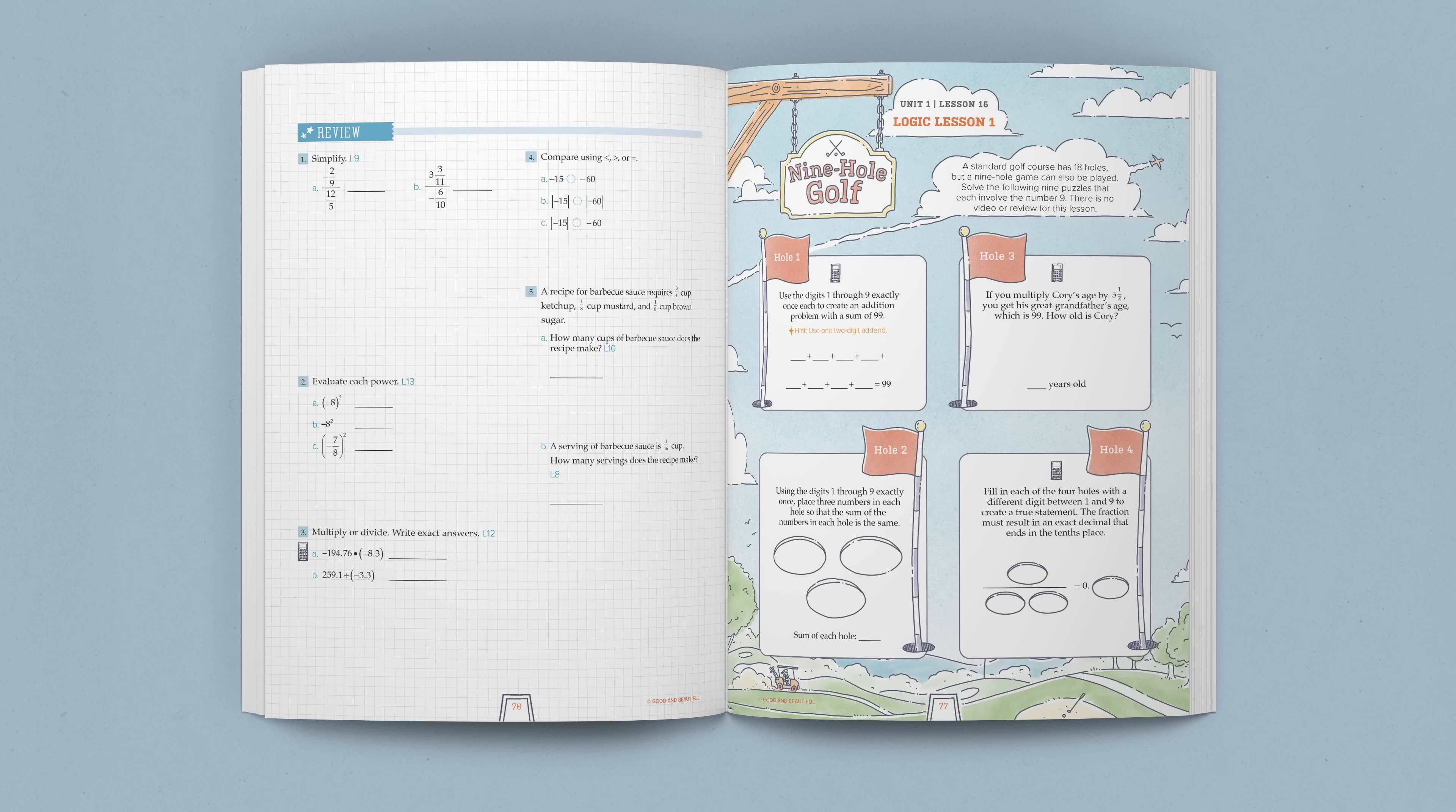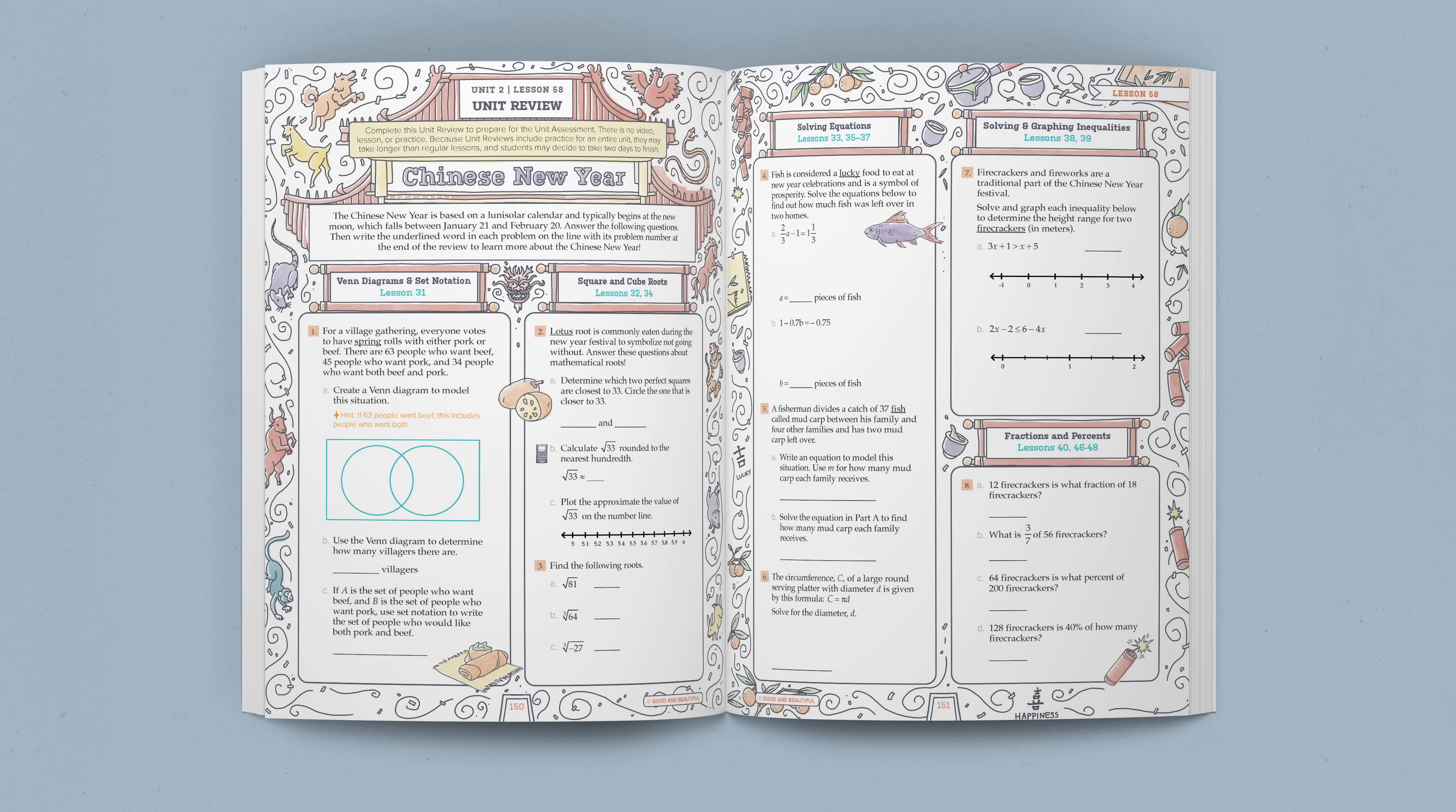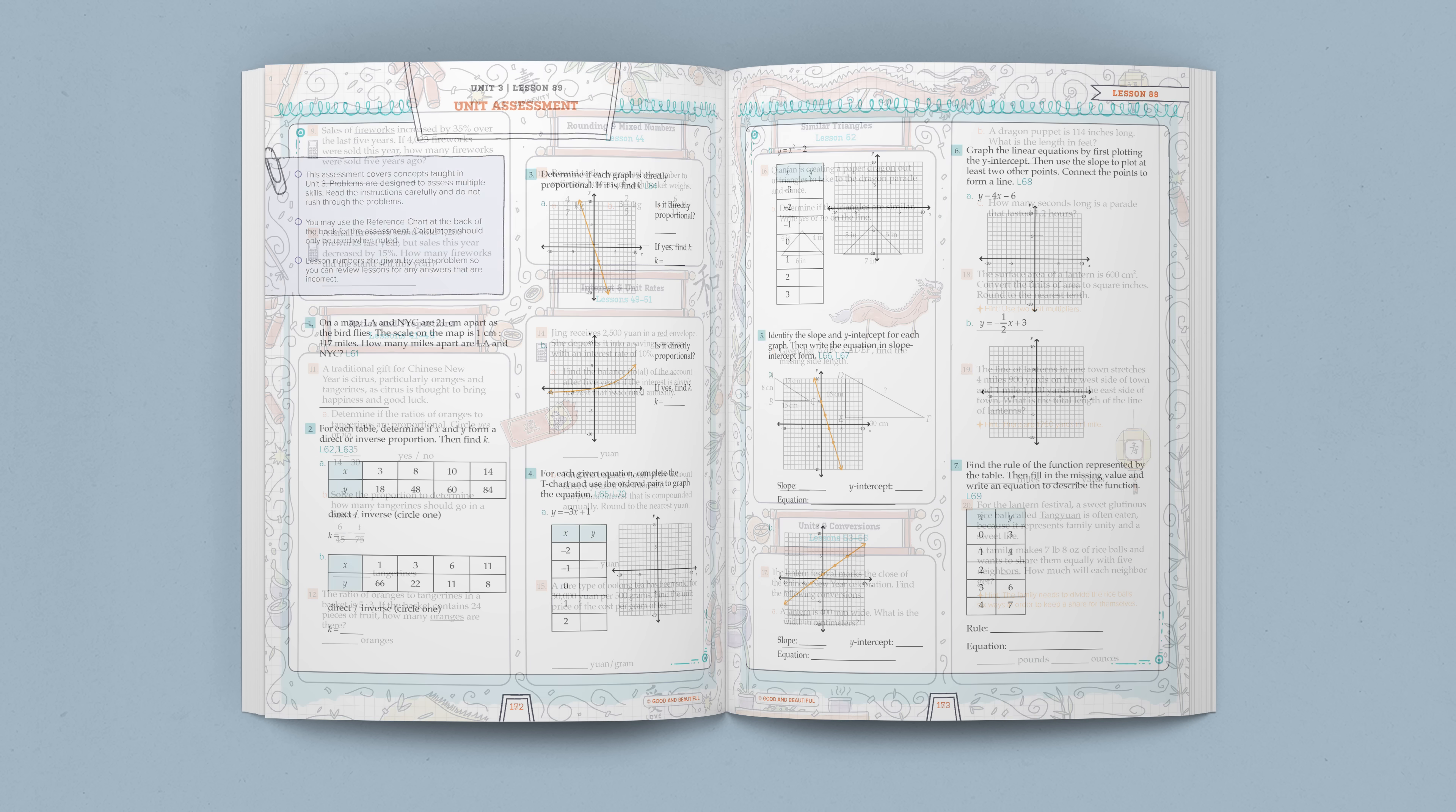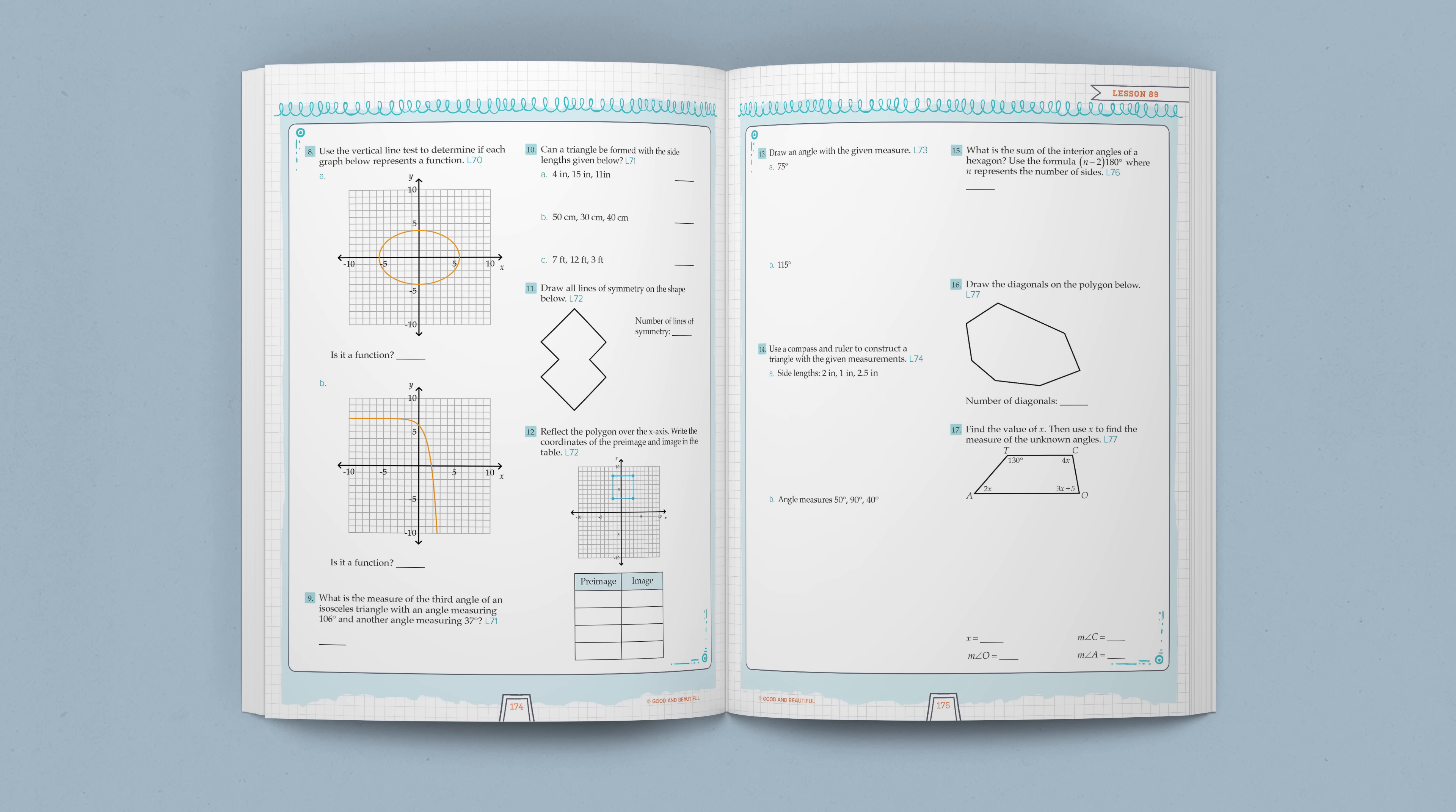Math 7 includes 120 lessons divided into four units. Halfway through each unit is a logic lesson. These lessons contain exciting puzzles and games to practice critical thinking. Each unit also contains a review and an assessment designed to show which concepts students need to further study. All reviews and assessments include lesson reference numbers, reminding students exactly which lesson to go back to for more practice.